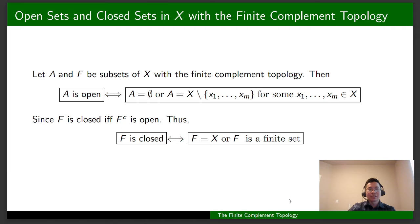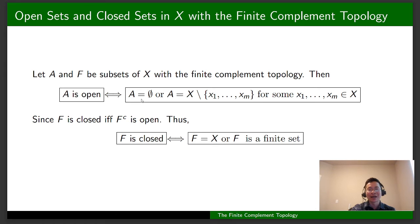We are going to explore some properties of open sets and closed sets in this topological space. A is open if and only if A belongs to tau — that is, A is the empty set or A is X minus some finite set. F is closed if and only if its complement is open. Therefore, F is closed if and only if F is the entire space X or F is a finite set, since the complement of the empty set is X and the complement of X minus {x1, ..., xm} is the finite set {x1, ..., xm}.